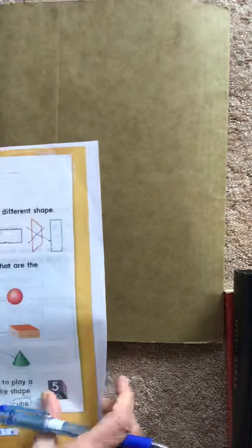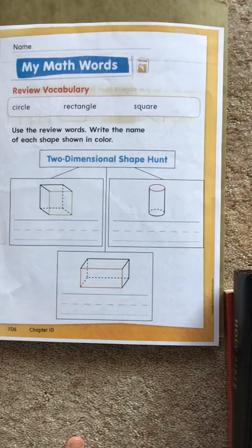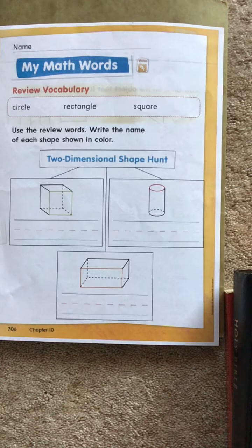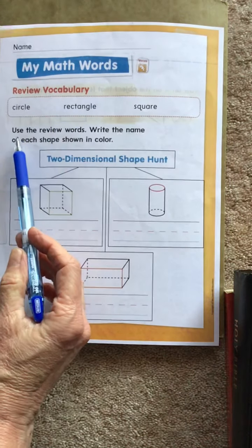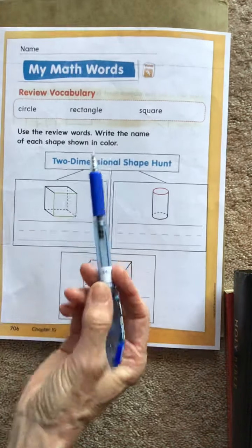All right, flip it over, and we have circle, rectangle, square. It says these are your review words. Use the review words. Write the name of each shape shown in color.